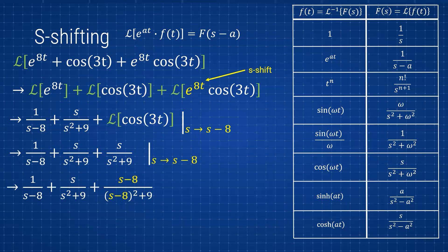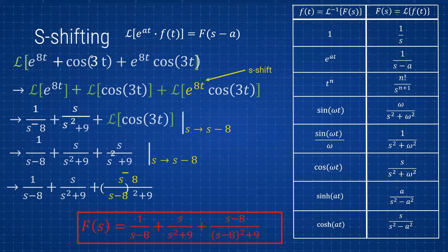We can simplify and expand the (s−8)² if we want, but it looks more aesthetic to leave it as is. So you can see the individual Laplace of an exponential, the Laplace of cosine, and the Laplace of an exponential times a cosine — they're similar but the s's are shifted. The final answer is 1/(s−8) + s/(s²+9) + (s−8)/((s−8)²+9). That's going from the t-domain to the s-domain.